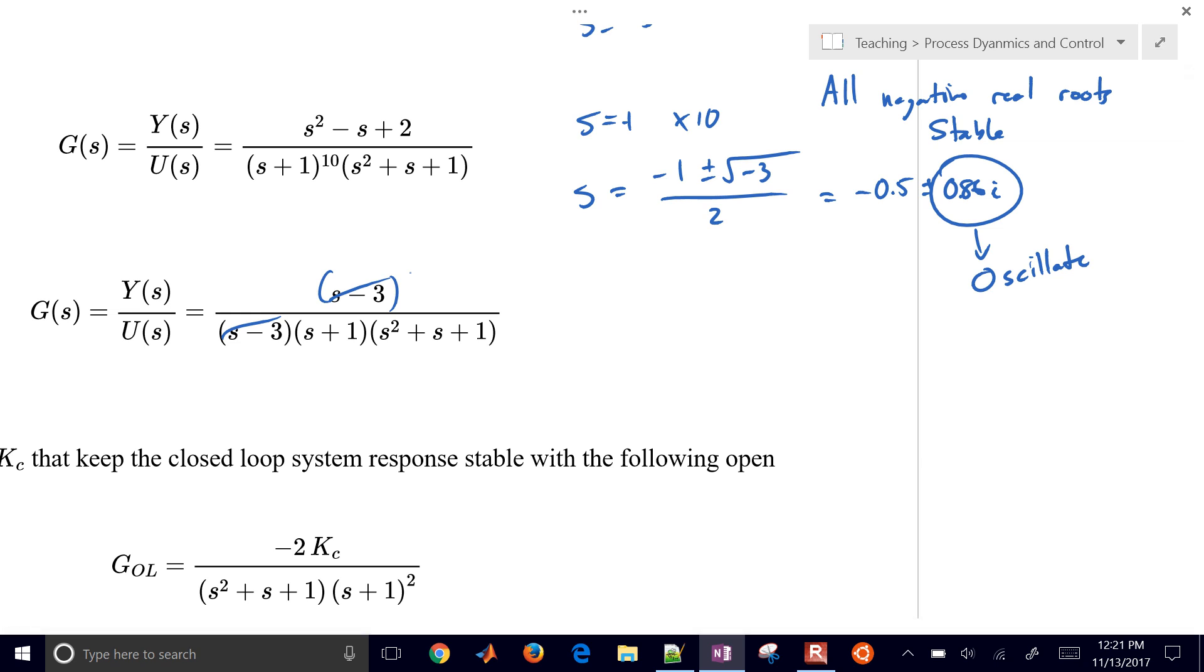you do have one of the roots of the numerator. We call those zeros. It's going to cancel with one of the poles, the roots of the denominator. And so we're just left with s equals negative 1 and then s equals negative 0.5 plus or minus 0.86i, same as we had before.